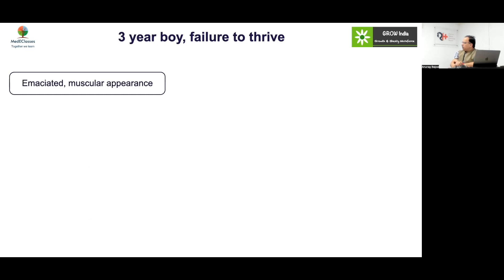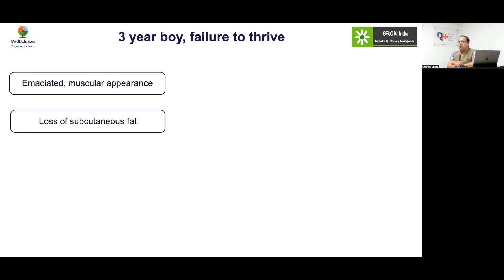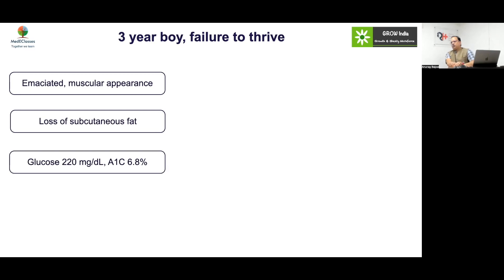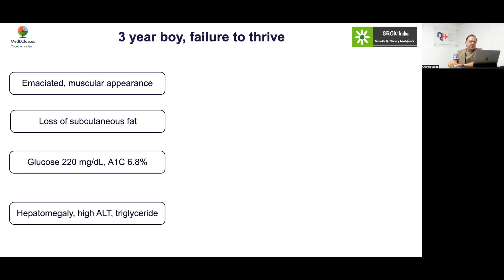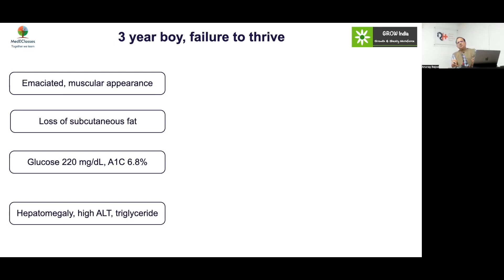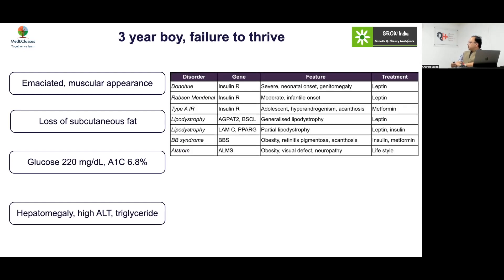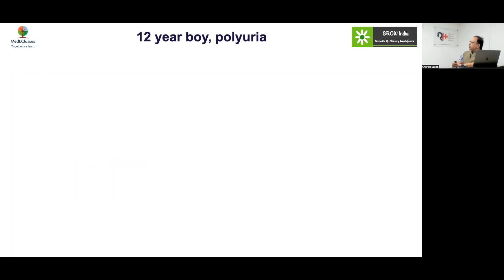Case 18: A 3-year-old boy with failure to thrive, emaciated with muscular appearance, loss of subcutaneous fat, slightly high sugars, slightly high HbA1c, hepatomegaly, high ALT, high triglycerides, and acanthosis. This is very early onset — more consistent with a congenital form of lipodystrophy, since acquired lipodystrophy typically follows an autoimmune disease. Various genetic defects can be responsible, such as an AGPAT2 defect.